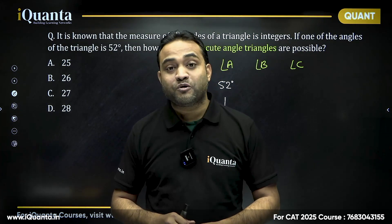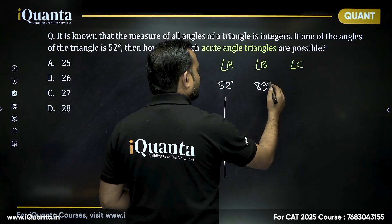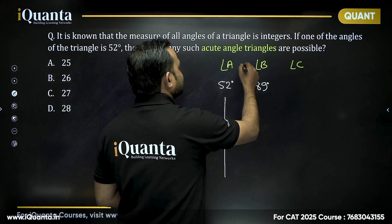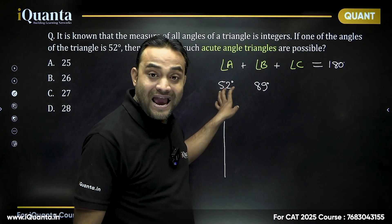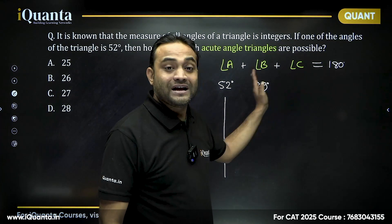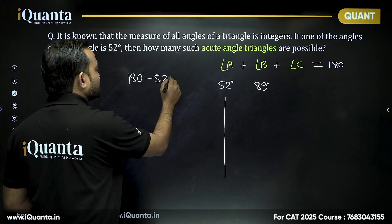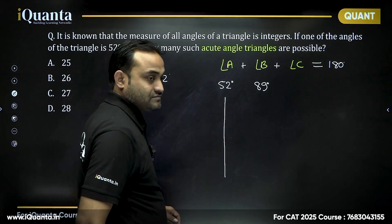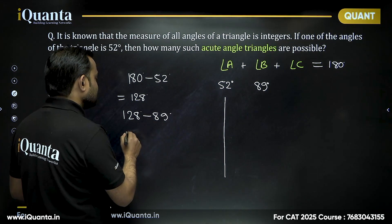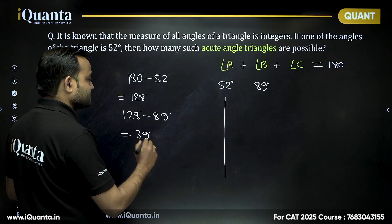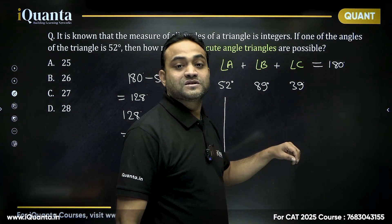The maximum possible value of any angle in an acute triangle is 89 degrees. Since the sum of all three angles is 180 degrees, and one angle is 52 degrees, the sum of the remaining two angles must be 128 degrees. If one of the remaining angles is 89 degrees, then the third angle must be 128 minus 89 equals 39 degrees. Similarly, if we decrease it to 88 degrees, the other becomes 40 degrees.